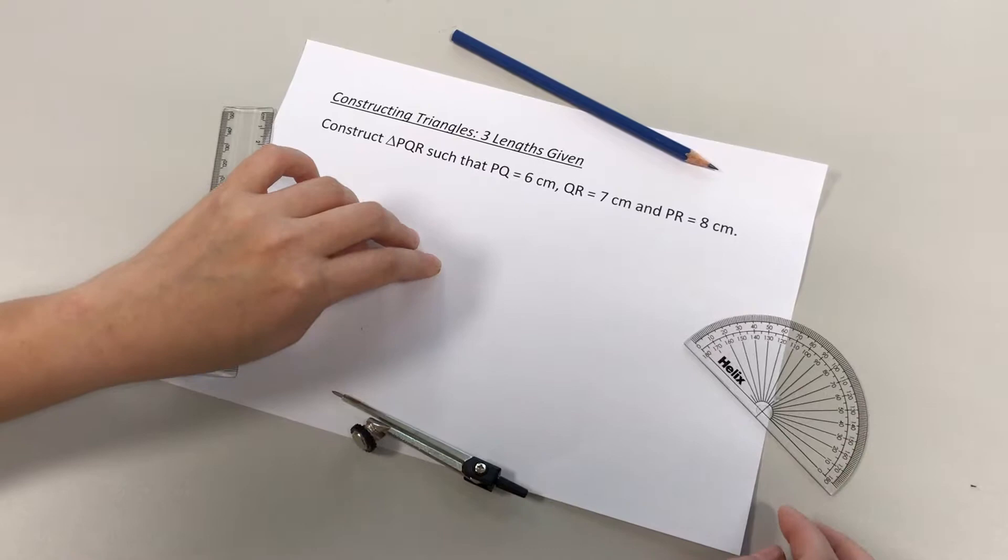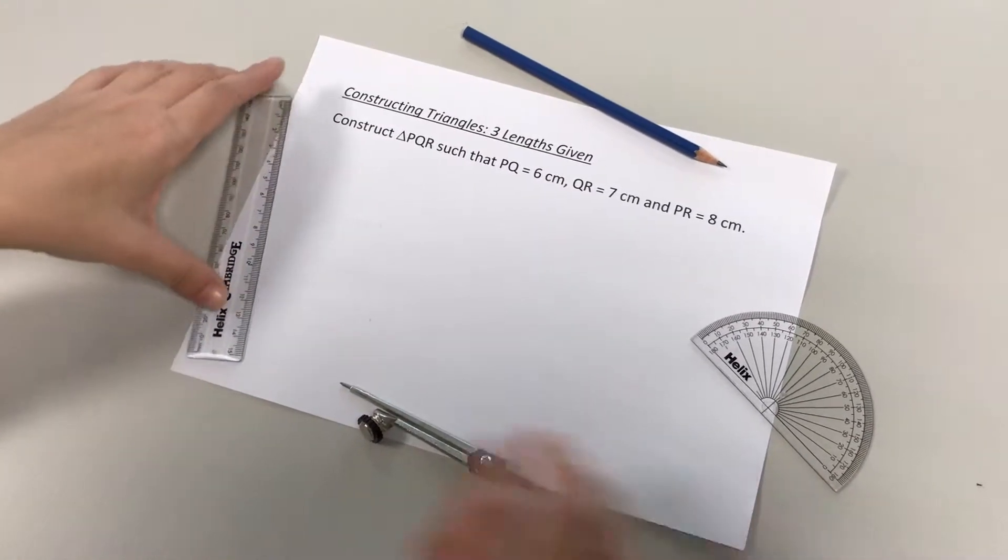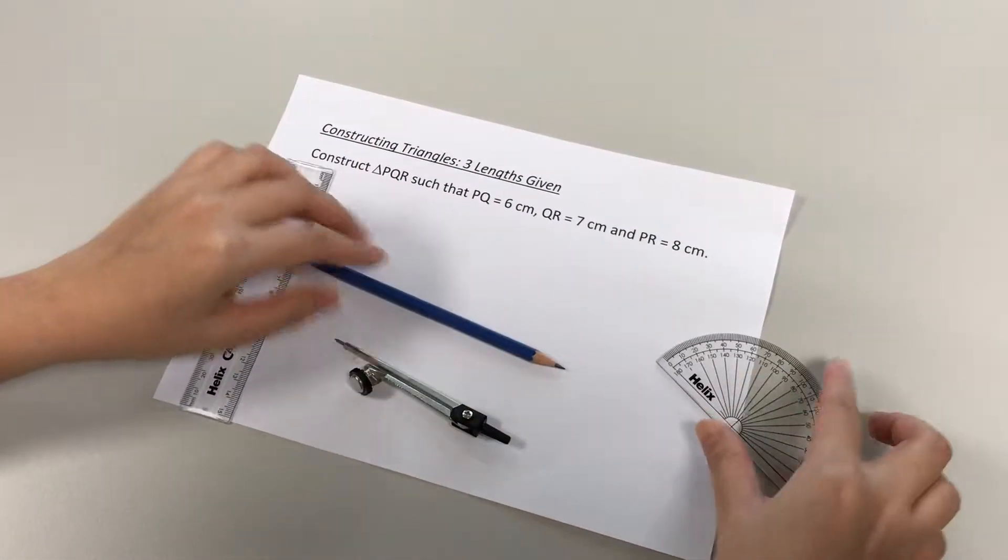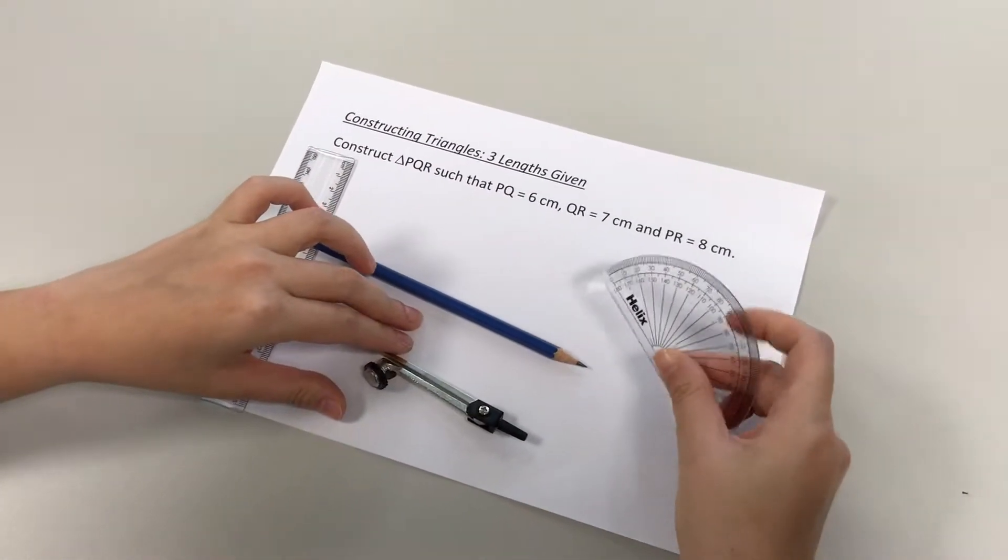Okay, but before we start, please make sure you have all the equipment that you need, which is basically a ruler, your compass with a pencil, as well as your protractor.